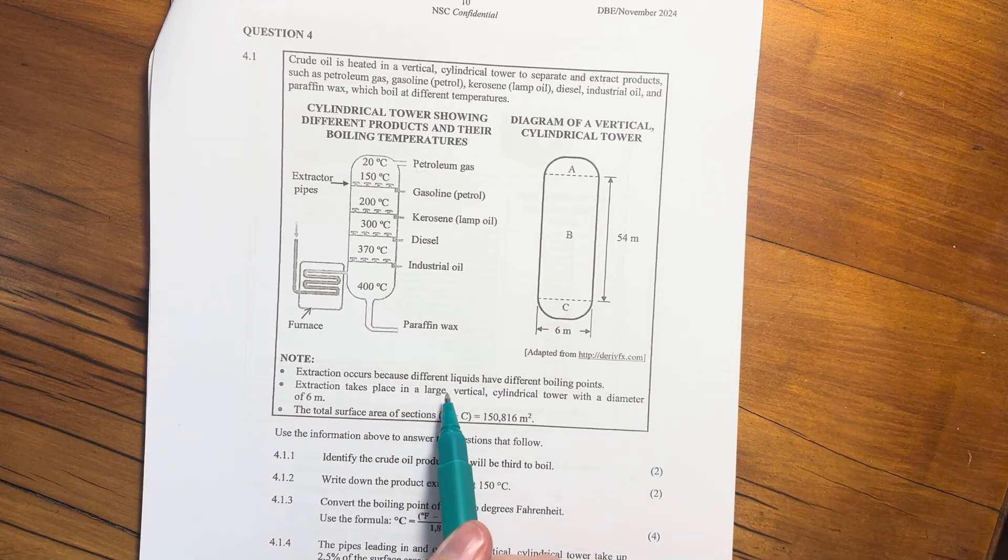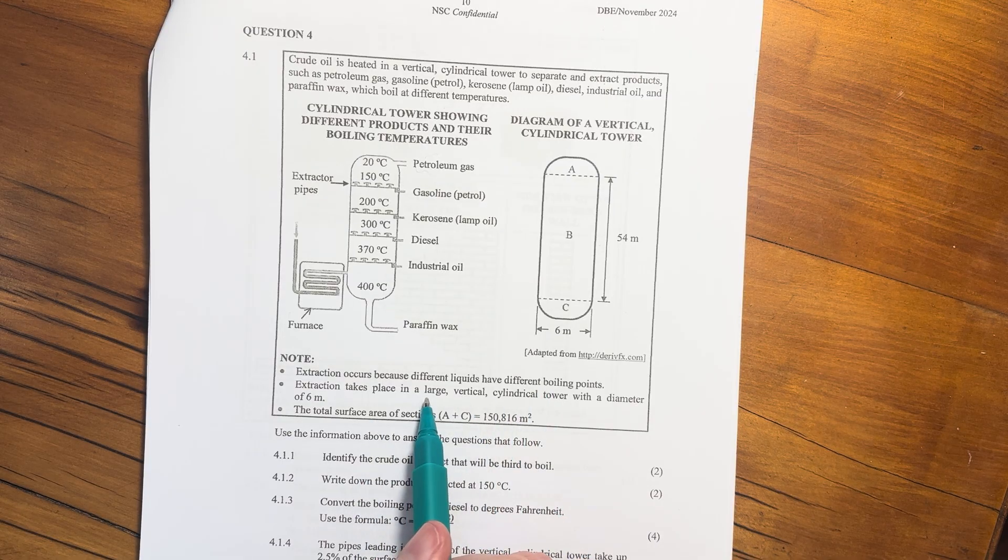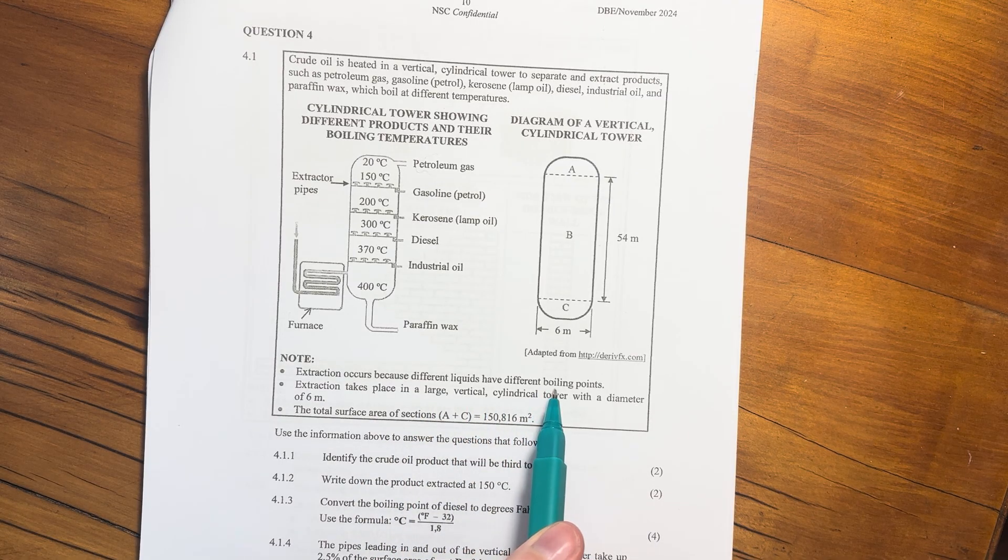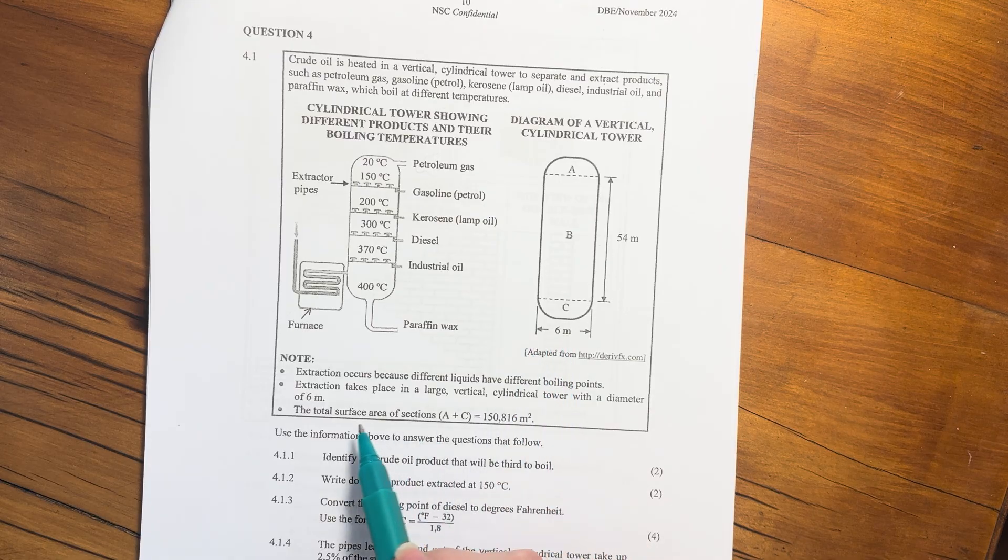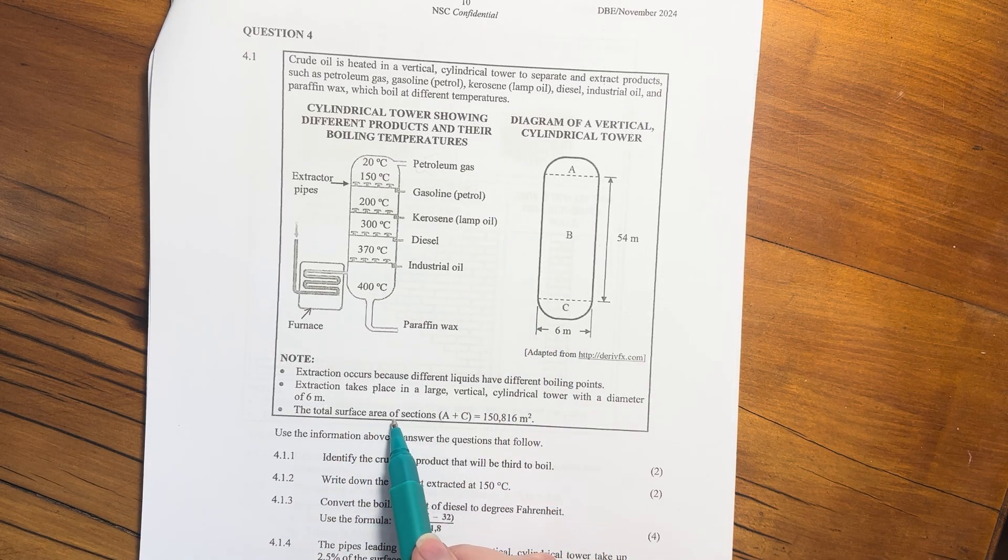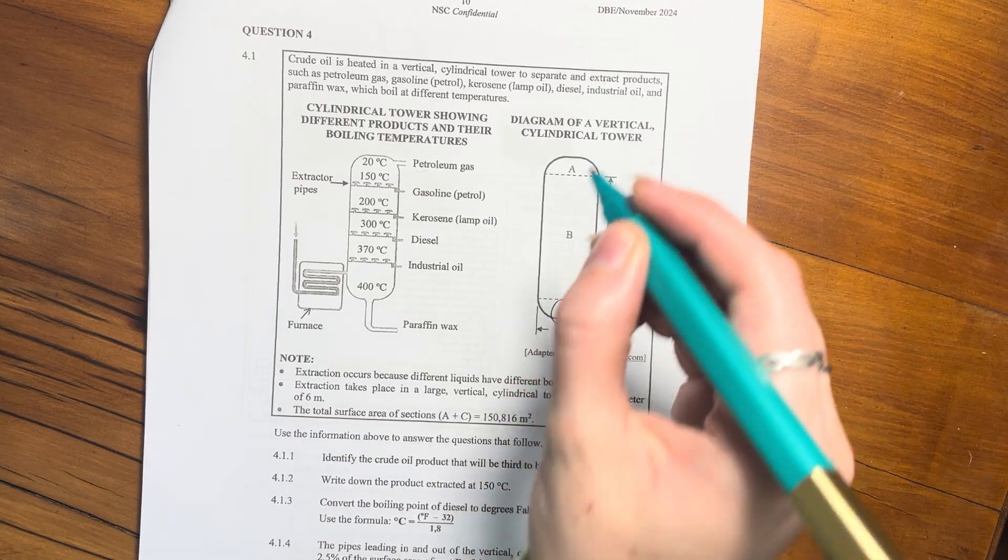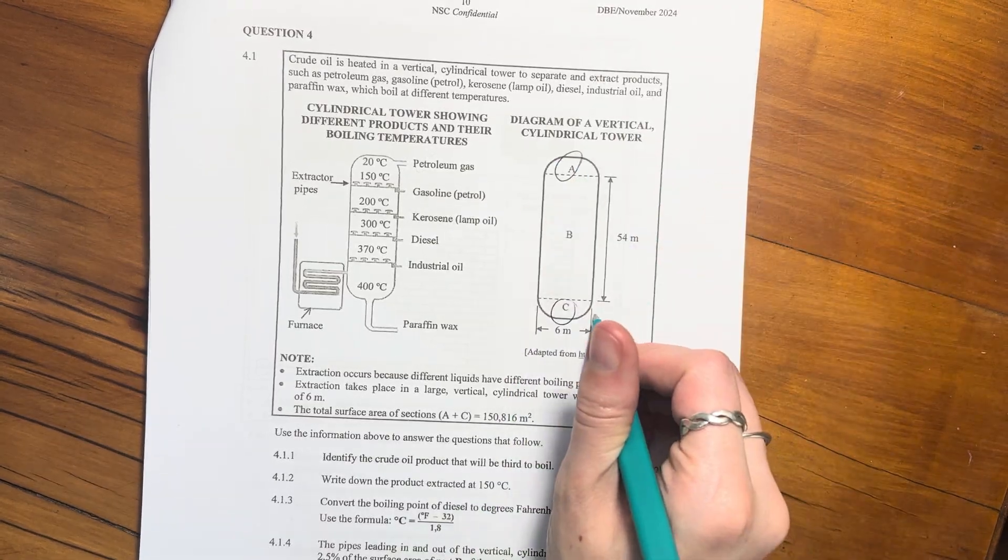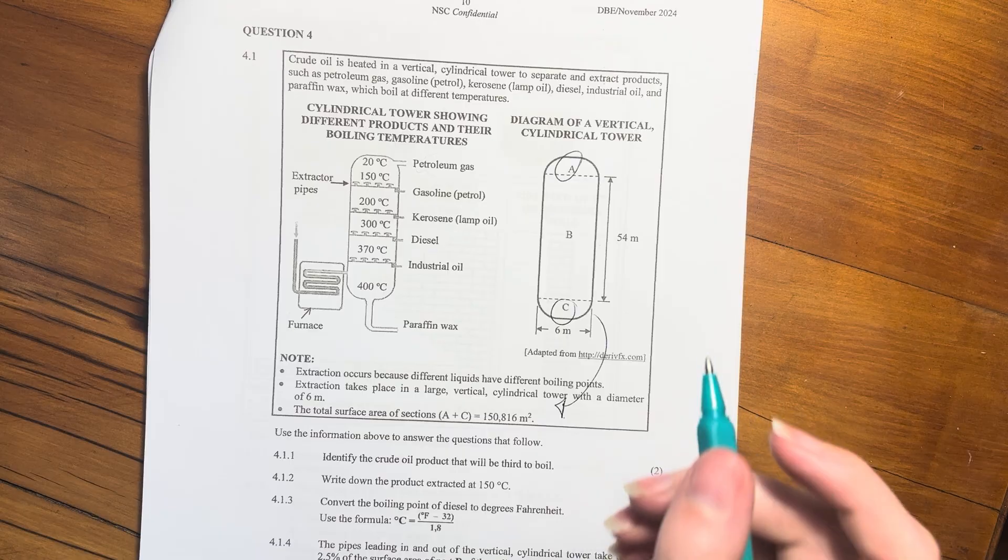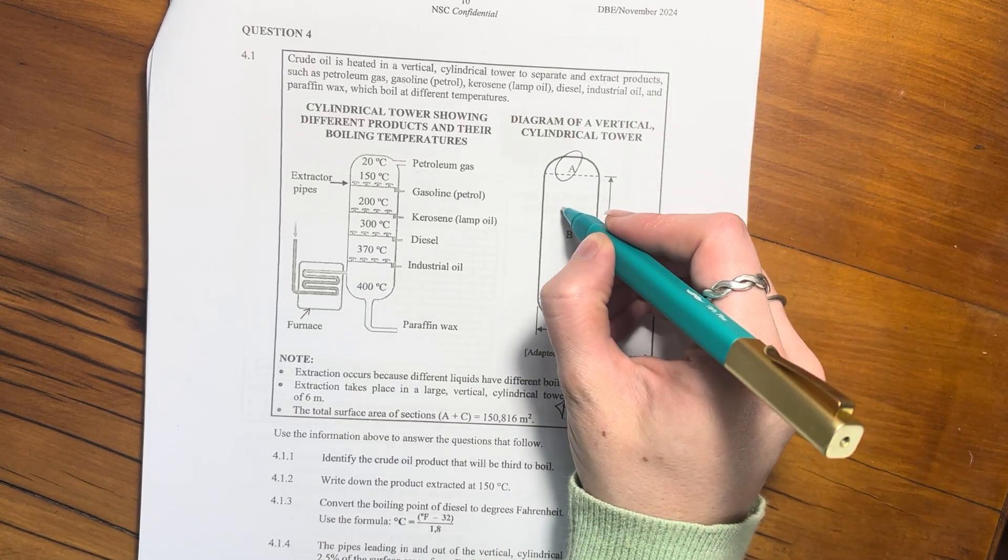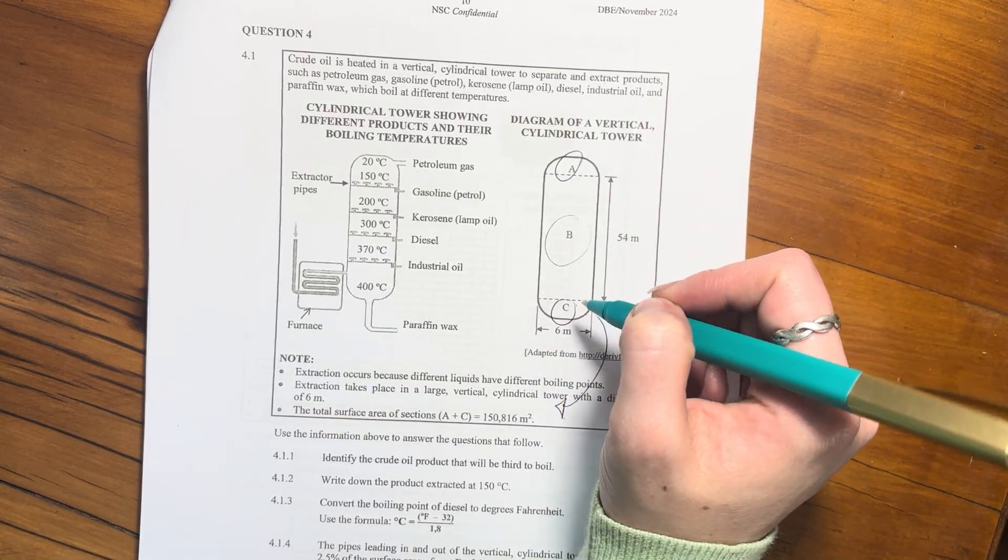Extraction occurs because different liquids have different boiling points. Extraction takes place in a large vertical cylinder tower, diameter six meters, and the total surface area of sections A and C. So we're probably going to have to work out B and then add A and C.